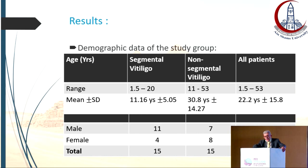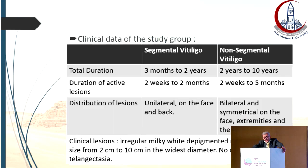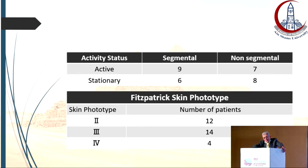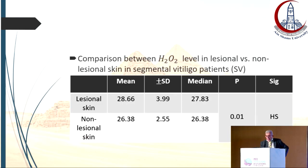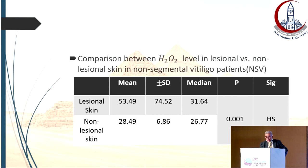Results showed that patient age ranged from one and a half to 53 years. Duration of disease was three months to two years in segmental vitiligo, and two to ten years in non-segmental vitiligo. Active disease was present in nine of the segmental group compared to seven of the non-segmental. Results showed a highly significant increase in H2O2 in lesional compared to non-lesional skin in all vitiligo patients, in both segmental and non-segmental vitiligo.